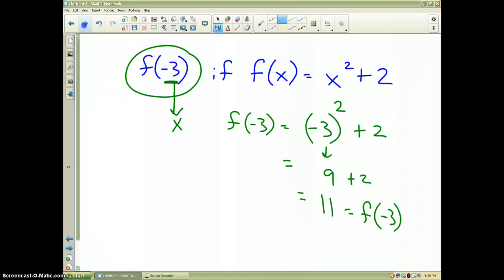Negative 3 would be what we call the input or the independent variable. 11 would be the dependent variable, or sometimes we call that the output.